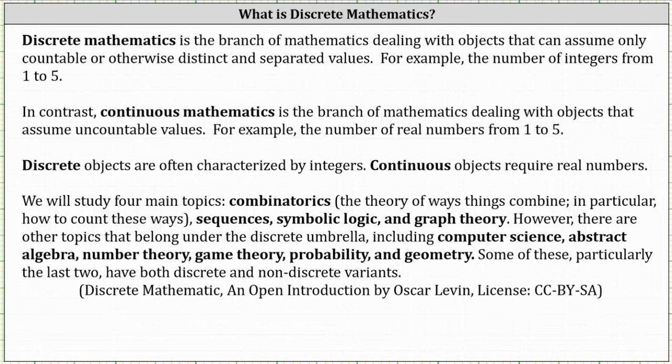However, there are other topics that belong under the discrete umbrella, including computer science, abstract algebra, number theory, game theory, probability, and geometry. Some of these, particularly the last two, have both discrete and nondiscrete variants.